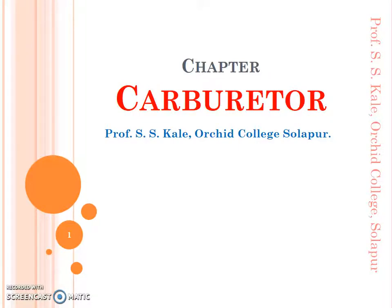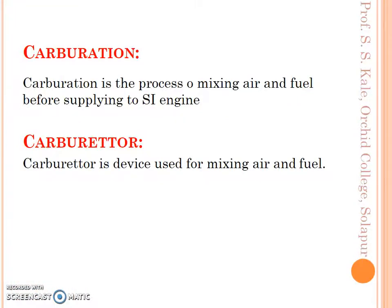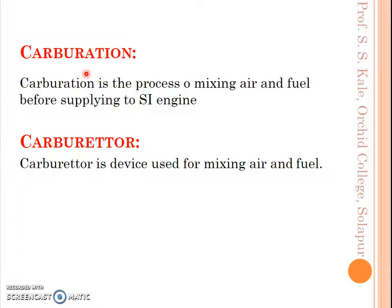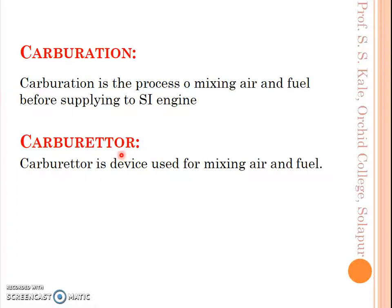The process of preparing this air plus fuel mixture is called carburetion. Carburetion is a process of creating a mixture of air and fuel before supplying it to the SI engine. Carburetor is a device which is used for preparing the air plus fuel mixture. So carburetor is a device, and carburetion is the process.